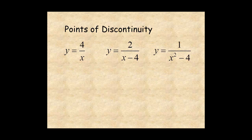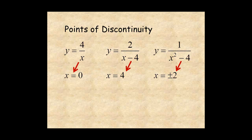So the real zeros of the denominator polynomial are points of discontinuity for the rational function. Notice the statement says real zeros — remember that some polynomials have imaginary zeros, and those would not define points of discontinuity.